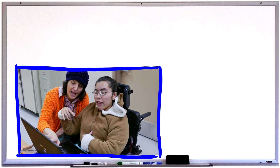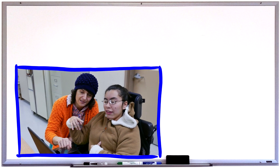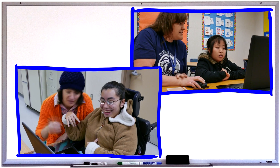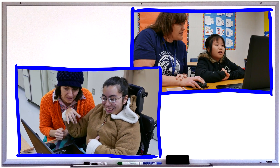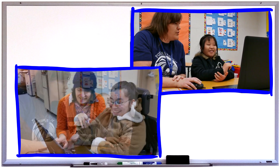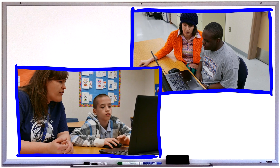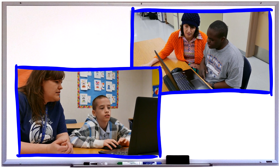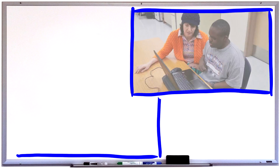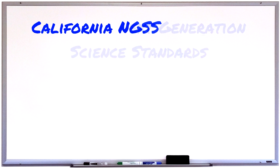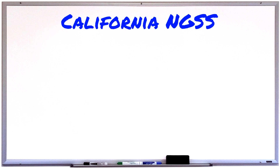Like other California Alternate Assessments, this new test is designed to be administered one-on-one to allow students with the most significant cognitive disabilities the opportunity to show what they know and can do. This assessment is based on alternate achievement standards aligned with the new California Next Generation Science Standards, also known as the California NGSS.